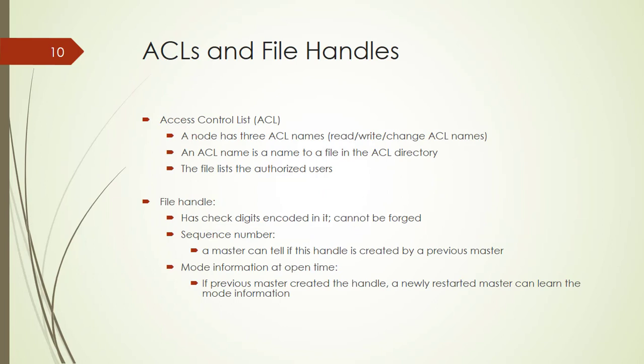The next topic is ACLs and file handles. ACL means access control list, which has three ACL names: the first is read, the second is write, and the third is change. An ACL name is a name of a file in the ACL directory, and the file lists the authorized users.